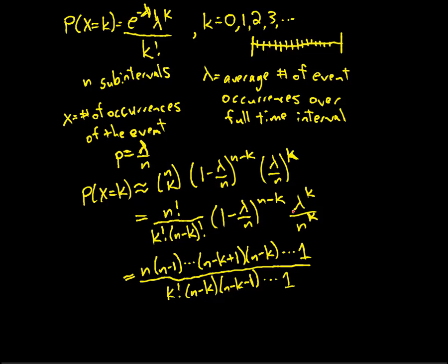So there's those. And then I'm going to let this sneak over. So we've got a lambda to the k. Down here we have an n to the k. And then we're still left with this 1 minus lambda over n to the n minus k.